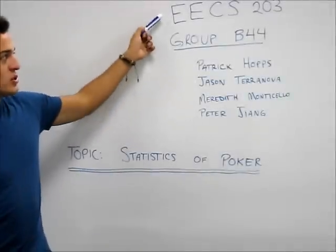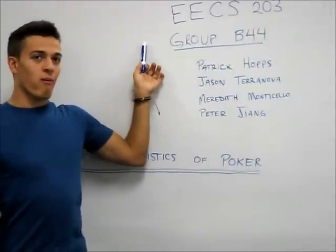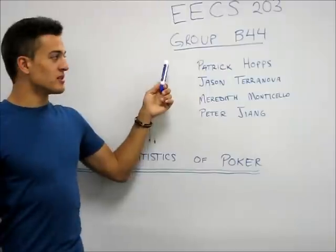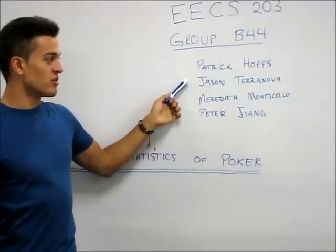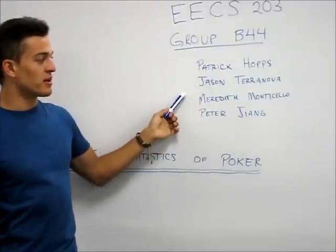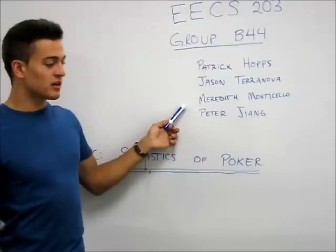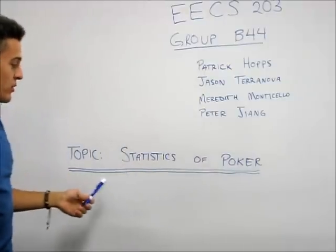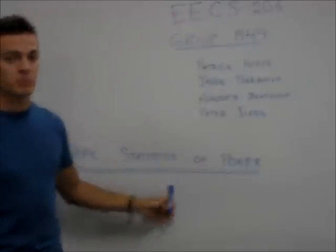Hi, we're EECS 203, Group B44, and our members consist of Patrick Hopps, Jason Terranova, Cameradith Monticello, and Peter John, and today we're covering the topic of the statistics of poker.